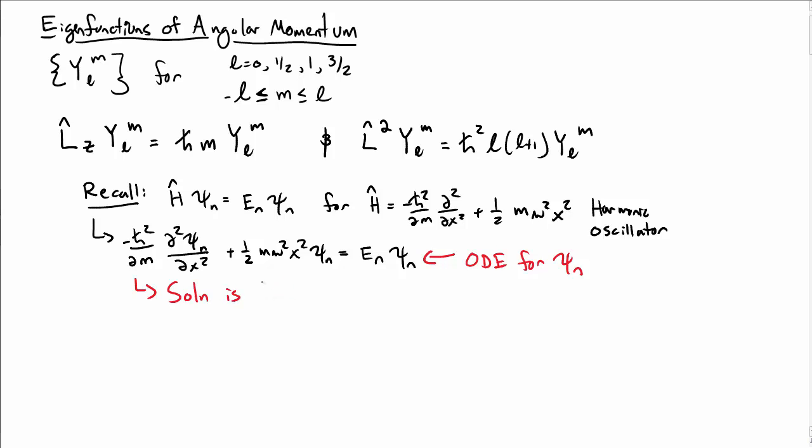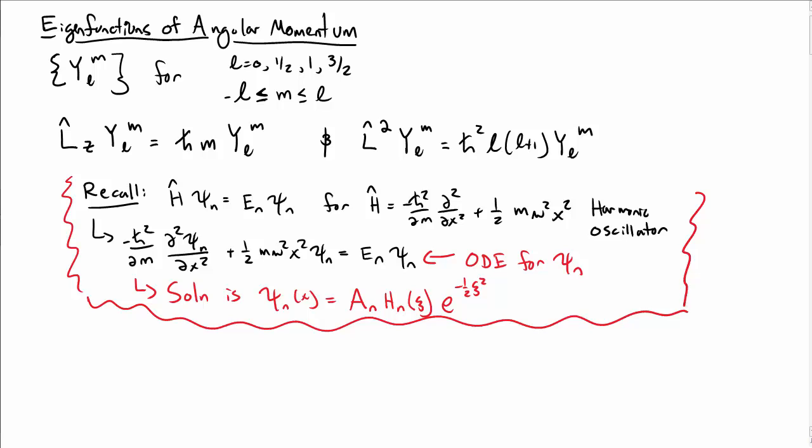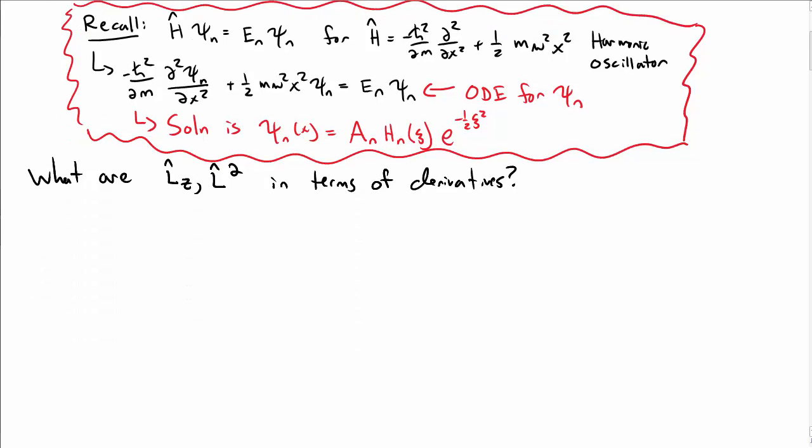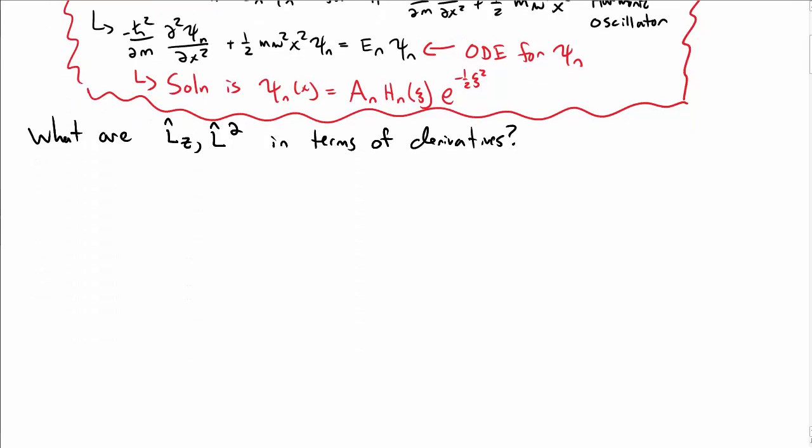So here's our differential equation and we then solve this ordinary differential equation for psi sub n. We found in this particular case the solutions were kind of complicated. They looked like a constant times Hermite polynomials times an exponential of minus 1 half c squared where c was defined in terms of x in an earlier video. So that's the idea of what we're doing here. We want to be able to write down an ordinary differential equation. So what we need to know are what are L_z and L squared in terms of actual derivatives so that we can write down ordinary differential equations and then solve those ordinary differential equations.